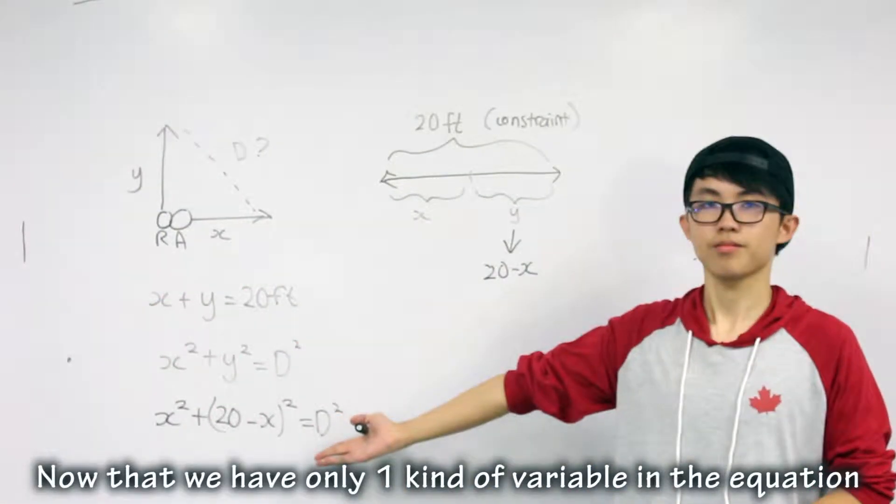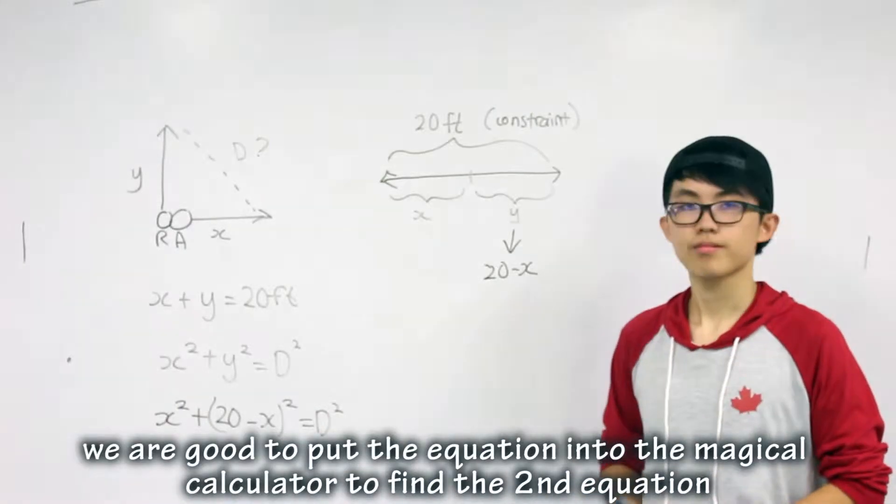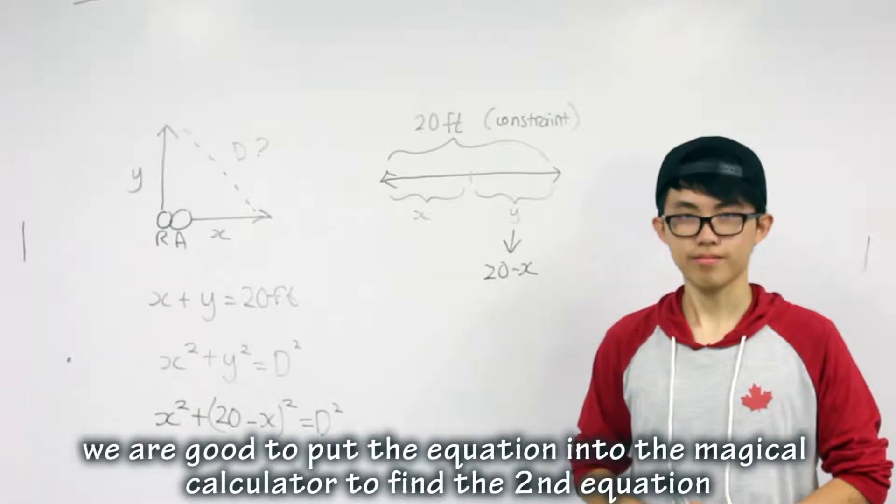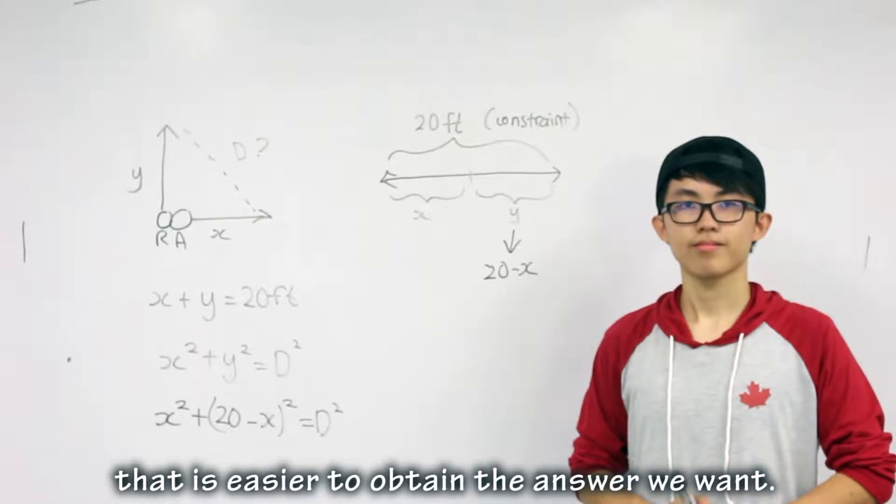Now that we have only one kind of variable in the equation, we are going to put the equation into the magical calculator to find the second equation that is easier to obtain the answer we want.